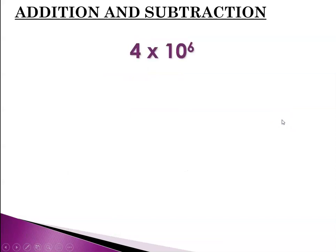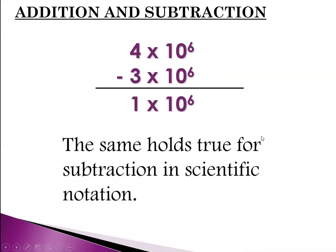Now here we have 4 times 10 to the 6 minus 3 times 10 to the 6, so 4 million minus 3 million equals 1 million. So the same holds true for subtraction if the numbers have the same magnitude, and that's really what the exponent is all about. The power of 10 is telling you the magnitude of the number, so if they're the same then you can just add them or subtract them. Easy peasy.